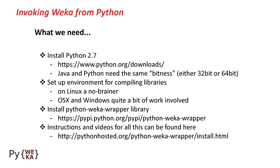So, what do we need? Well, first of all, we have to install Python 2.7, which you can download from python.org. But make sure that Java that you've got installed in your machine and Python have the same bitness, they're either 32-bit or 64-bit. You cannot mix things. And you have to set up an environment that you can actually compile some libraries. On Linux, that's an absolute no-brainer, a few lines on the command line and you're done within five minutes. However, OS X and Windows are quite a bit of work involved, not necessarily for the faint-hearted.